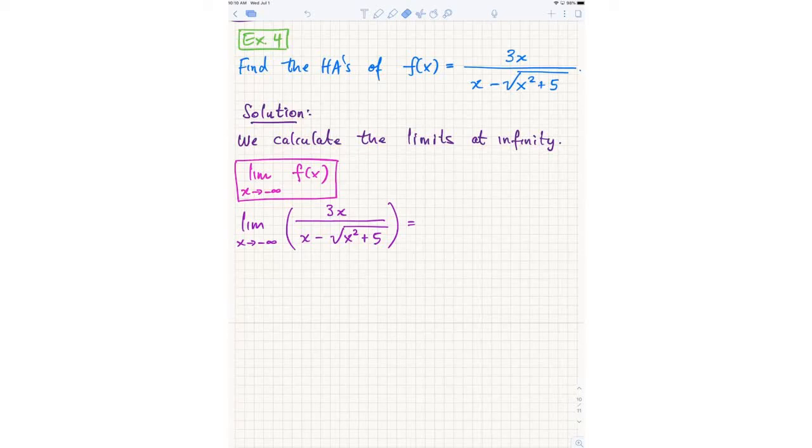All right. So we were looking at this example last time. We want to find the horizontal asymptotes of this function. This is a fairly challenging problem.